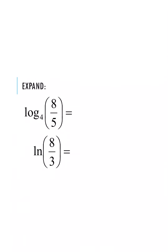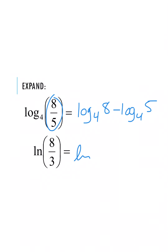Here are two examples. For the first one, I have log base 4 of 8 over 5, and I also have the natural log of 8 over 3. For the first example we are dividing the 8 and the 5, so when I expand this I'm going to be subtracting: log base 4 of 8 minus log base 4 of 5. Similarly for the natural log, I have the natural log of 8 minus the natural log of 3.